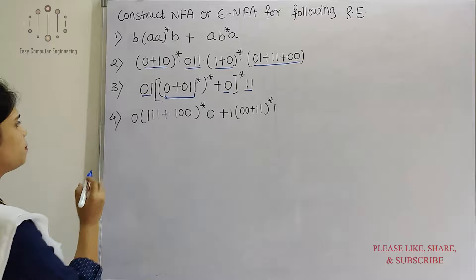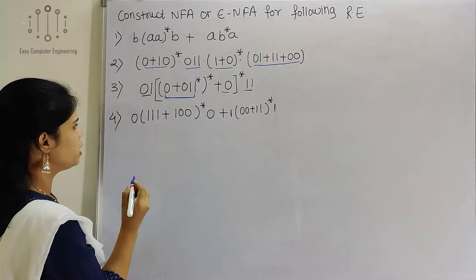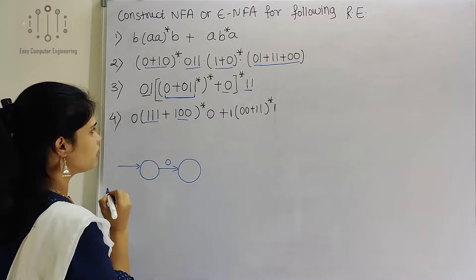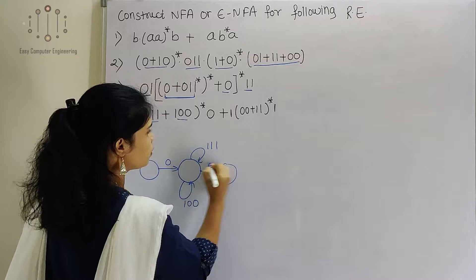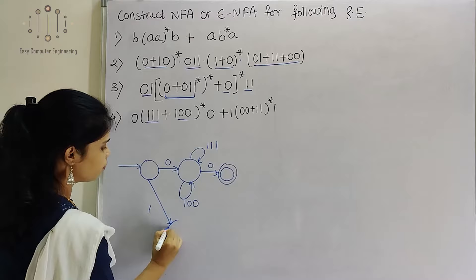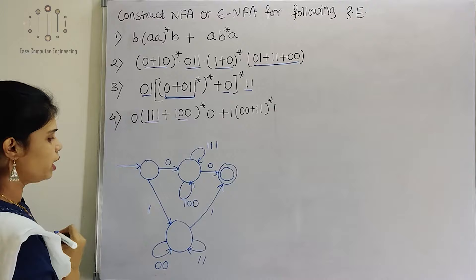Now moving to the fourth example. It is 0 concatenated with a middle part, then 0 again with an OR operator — so it starts with 0 and ends with 0, with a starred middle. The middle shows 1,1,1 and 1,0,0 directly. There is a final state for the OR. Then another path has 0,0 and 1,1 starred, then 1.